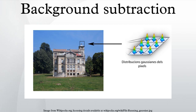Conventional approaches: a robust background subtraction algorithm should be able to handle lighting changes, repetitive motions from clutter, and long-term scene changes.